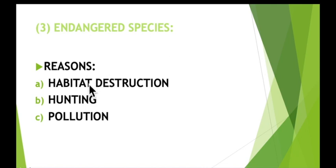Habitat destruction: human activities can destroy habitats in order to farm the land, make houses, or build roads. Species with no habitat cannot survive, because a habitat is the place in which a species is accustomed to living — if their habitat is destroyed, they are unable to survive in a new one.